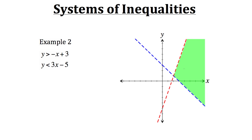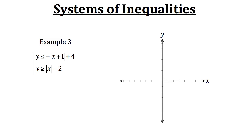The solution can be any point in that green region. Now let's take a look at another example that's a bit different. With example 3, we have a system of two inequalities, but this time those inequalities involve absolute values. Just like with all our other systems, we need to graph both inequalities onto the same coordinate plane and look at where their regions are.